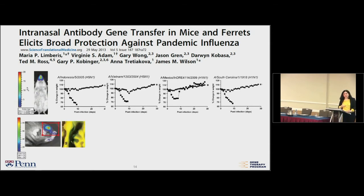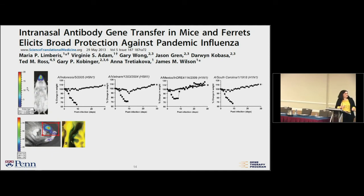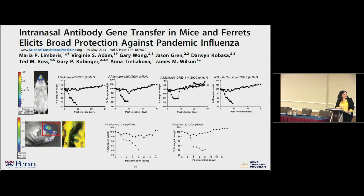We then changed models to the ferret, which is more relevant to the influenza world. Using AAV9 with firefly luciferase, we showed we could target the nasal epithelia — the majority of the nasal septum transduced, visible as light blue beta-gal cells when looking down the septum. Similarly to mice, we had a flat survival line when ferrets were given either H5N1 or H1N1, while naive animals succumbed to the infection.